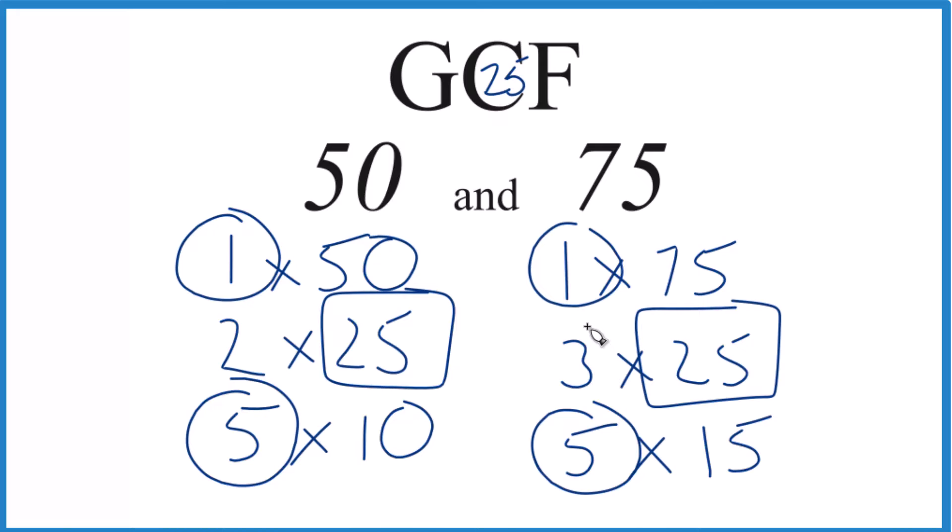You could use other methods like prime factorization, but unless you have really big numbers, this works pretty well. It's Dr. B looking at the greatest common factor for 50 and 75. The answer, 25.